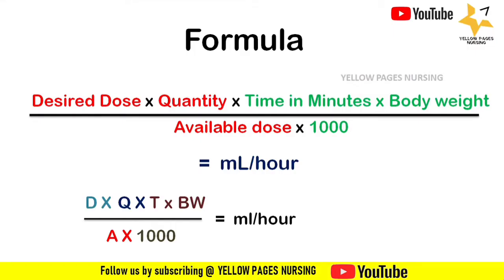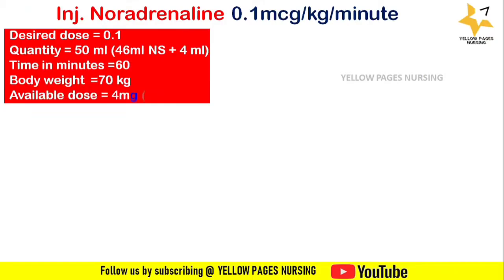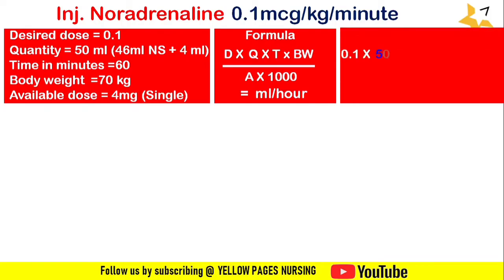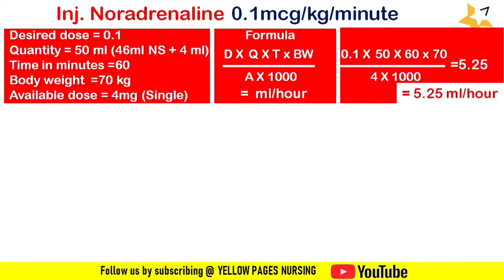Example 1: Injection noradrenaline 0.1 mcg/kg/min IV, patient body weight 70 kg. For single strength: desired dose = 0.1, quantity = 50 ml (46 ml normal saline + 4 ml noradrenaline), time = 60 minutes, body weight = 70 kg, available dose = 4 mg. Applying the formula gives the answer: 5.25 ml per hour.